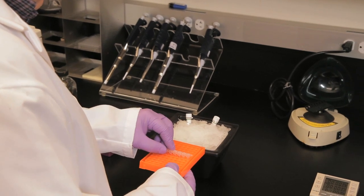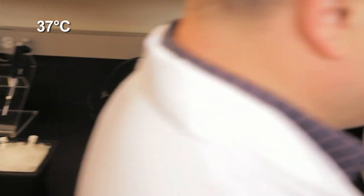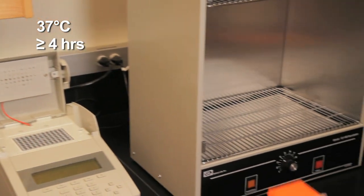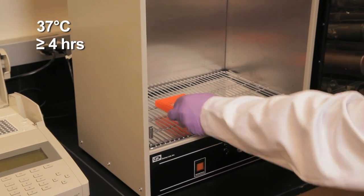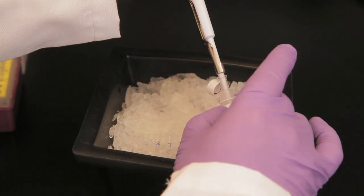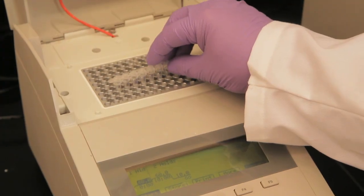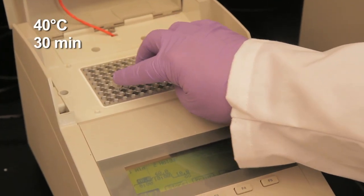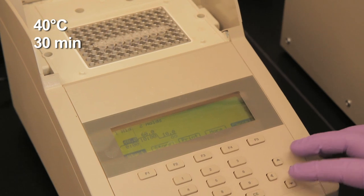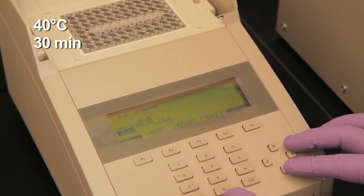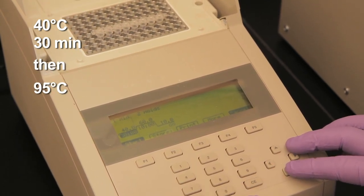Incubate all six tubes at 37 degrees Celsius for at least 4 hours. Then add 1 microliter of Proteinase K into each tube and incubate at 40 degrees Celsius for 30 minutes. Finally, inactivate the Proteinase K by incubating at 95 degrees Celsius for 10 minutes.